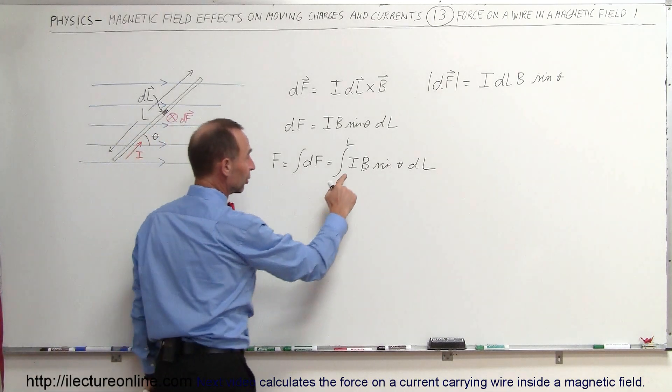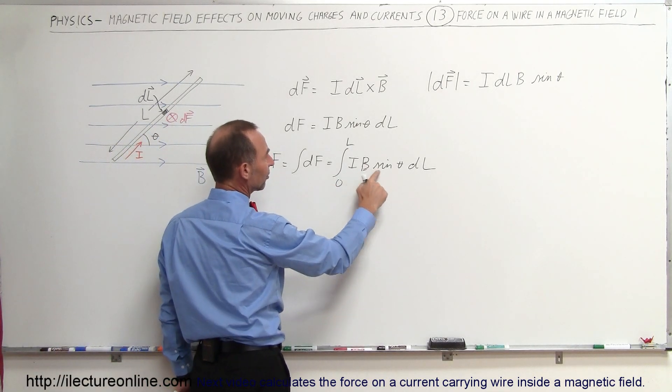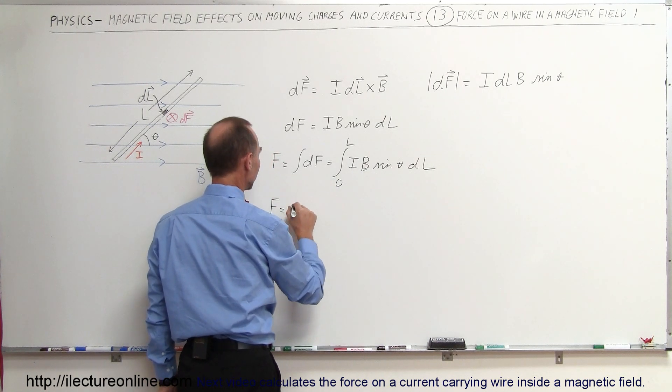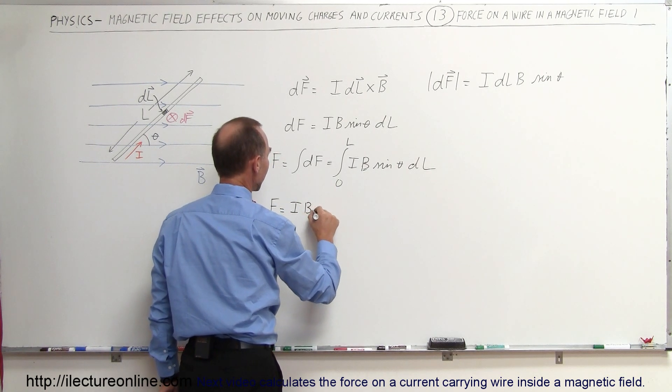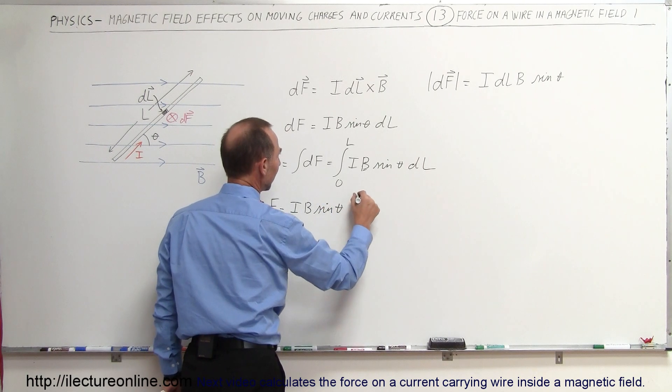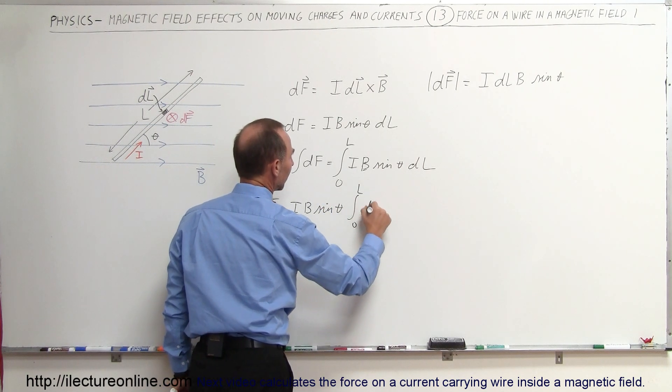Notice in this integral the current is a constant, the B field is constant, the angle is a constant, so we know that the force equals I B sine of theta times the integral from zero to L of dl.